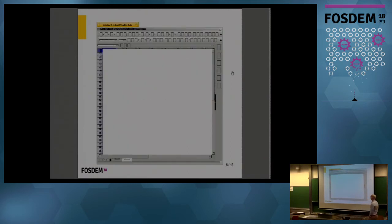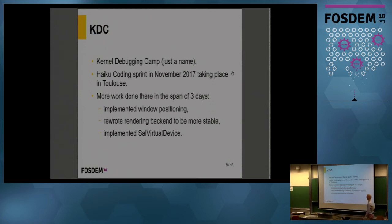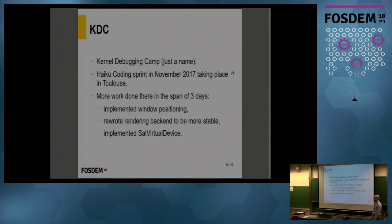And that's the result. Later that year, we had the kernel debugging camp — a Haiku coding sprint in November 2017. It was really great because we could work on any Haiku-related project all the time, and a lot of work got done in just three days. I implemented window positioning so that the Haiku layer would respect where the window should be positioned. I rewrote the rendering back end to be more stable, because lots of crashes were related to the threading model BAPI uses. And I implemented the SIL virtual device, which got me a visible result.